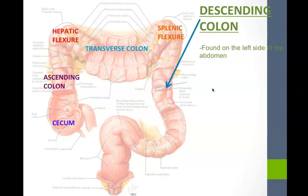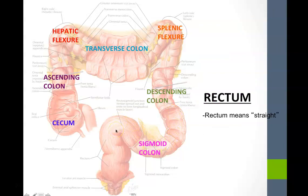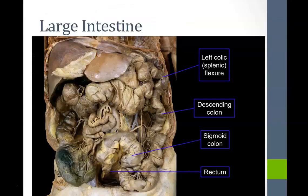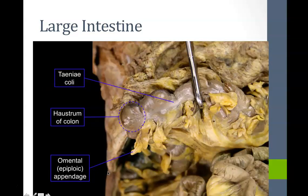After the splenic flexure, the large intestines travel inferiorly as the descending colon on the left side of the abdomen. It then forms a loop called the sigmoid colon — the loopiness resembles the letter S. After the sigmoid colon, it goes straight down as the rectum, since rectus or rectum means straight. We can see the splenic flexure, the sigmoid colon loop, and the rectum in the cadaveric image.